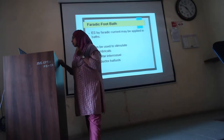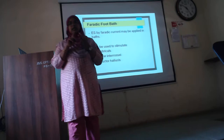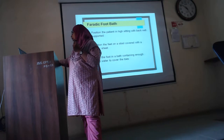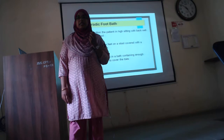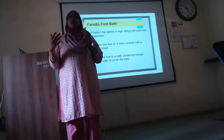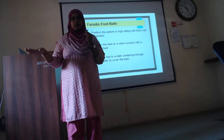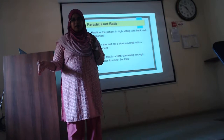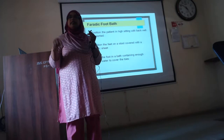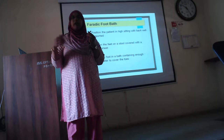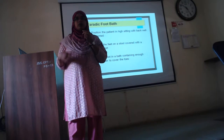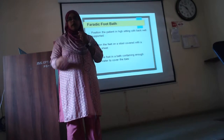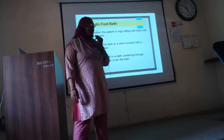Which muscles can be treated? Faradic current may be applied in a bath for the lumbricals, interossei, and abductor hallucis. For each of these muscles, the position of electrode placement is different. Generally, the patient should sit on a high stool, with a low stool kept in front on which the water tub is placed. The electrode placement depends entirely upon which muscles you want to stimulate.